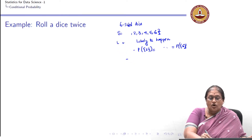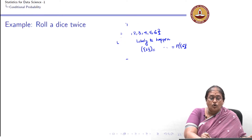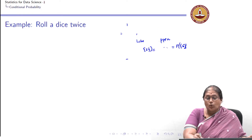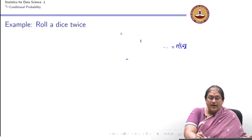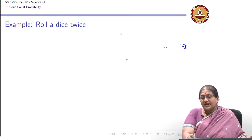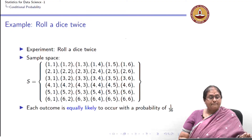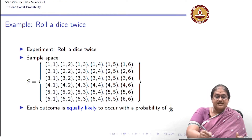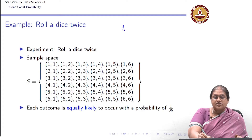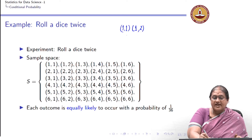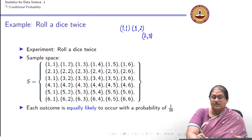Now suppose I am rolling this fair dice twice. What are the outcomes? The sample space in this case is going to be pairs like: first toss is 1 and second roll is 1, first is 1 and second is 2, first is 1 and second is 3, and so on.